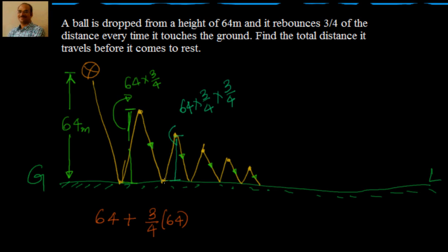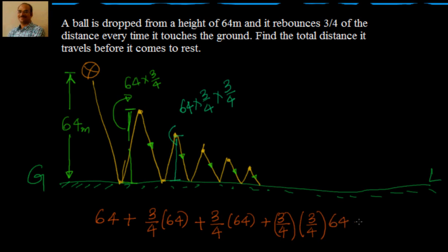After that the ball again comes down due to gravity — that is again (3/4) × 64. Then once it reaches the ground it rebounds by 3/4 of the distance it travelled, becoming (3/4) × (3/4) × 64. One more time it reaches that height, comes back down the same distance. This continues till it comes to rest.